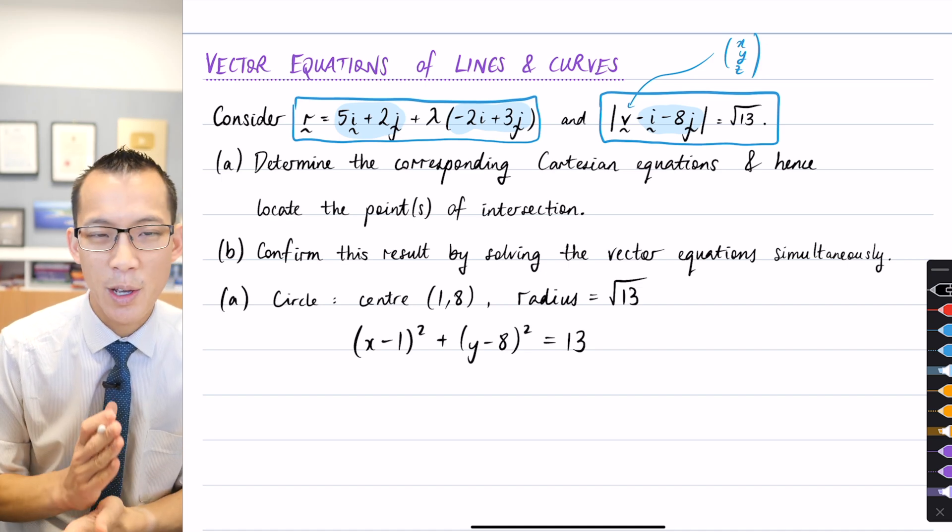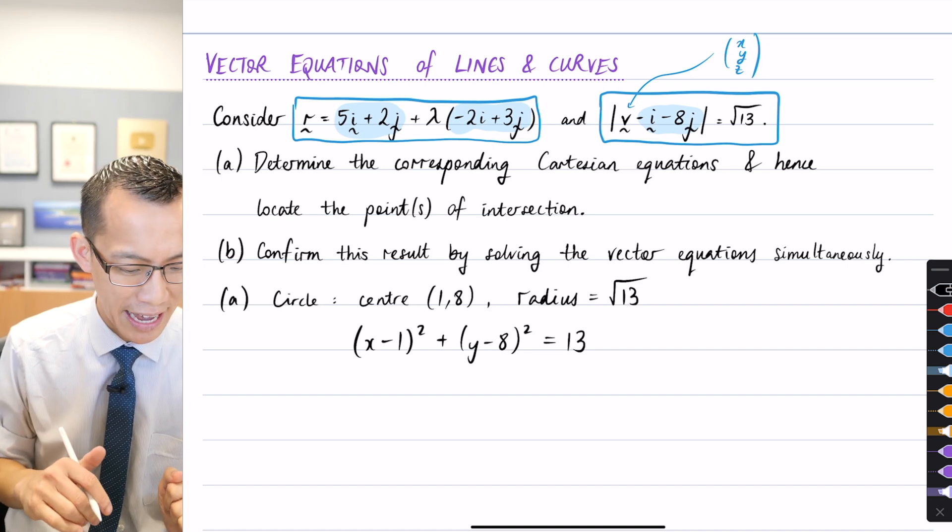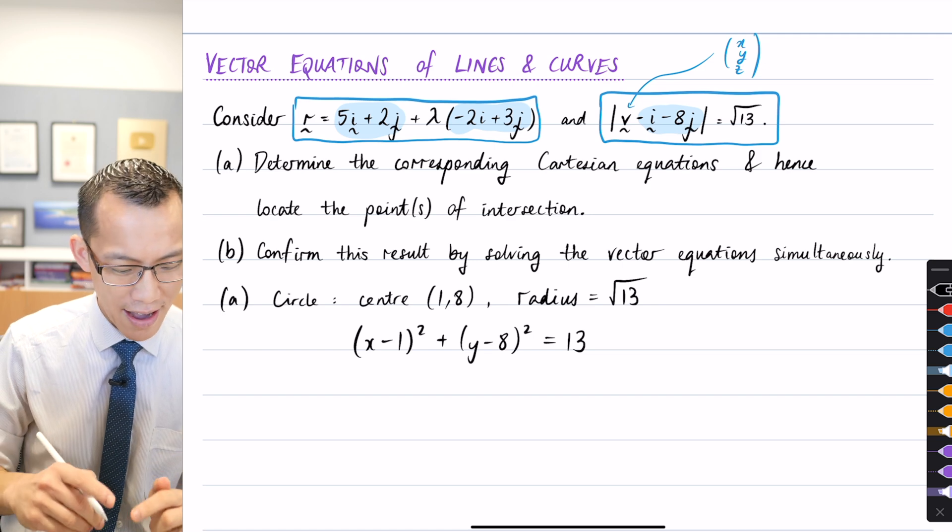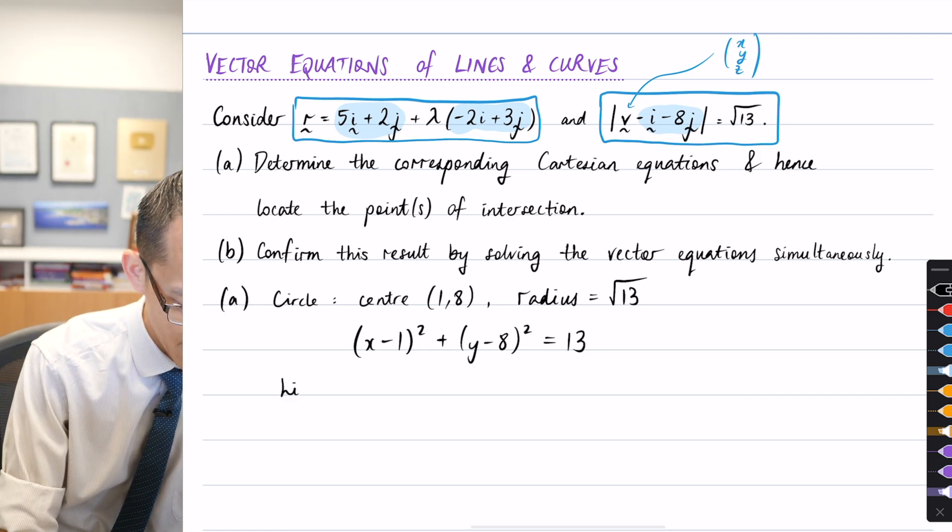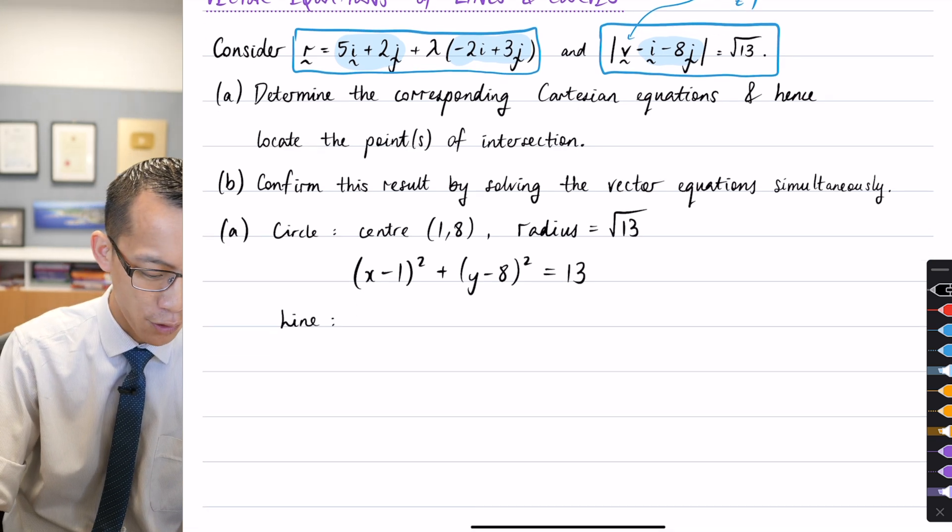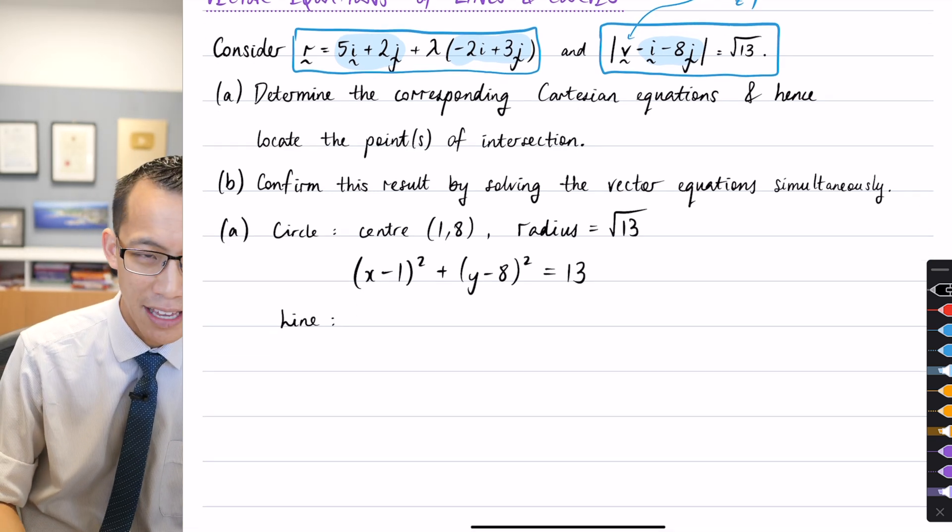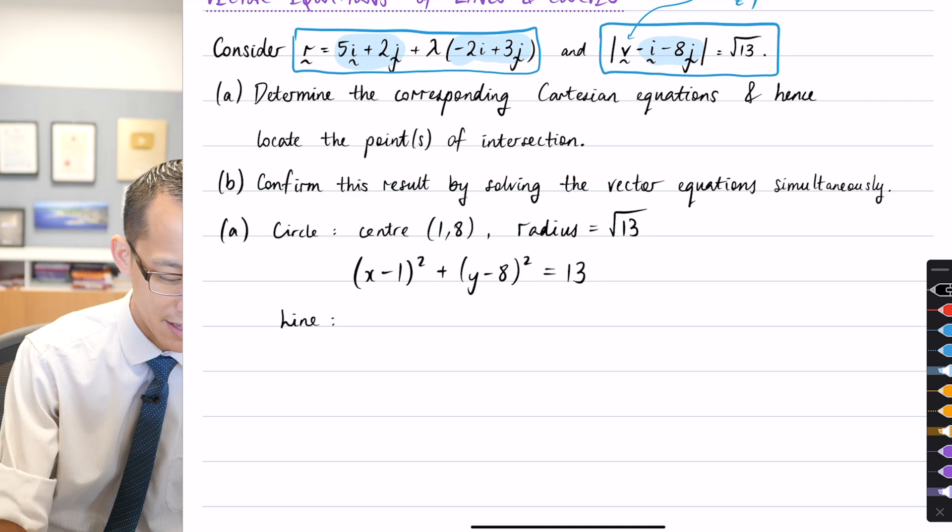Happy times, you are exactly right. The circle is ironically easier to work out. When we go to the line, I'm going to, as I said before, even though I've shown it to you in component form, I'm going to write it in column form because I think it actually makes what we're about to do a bit easier to see.